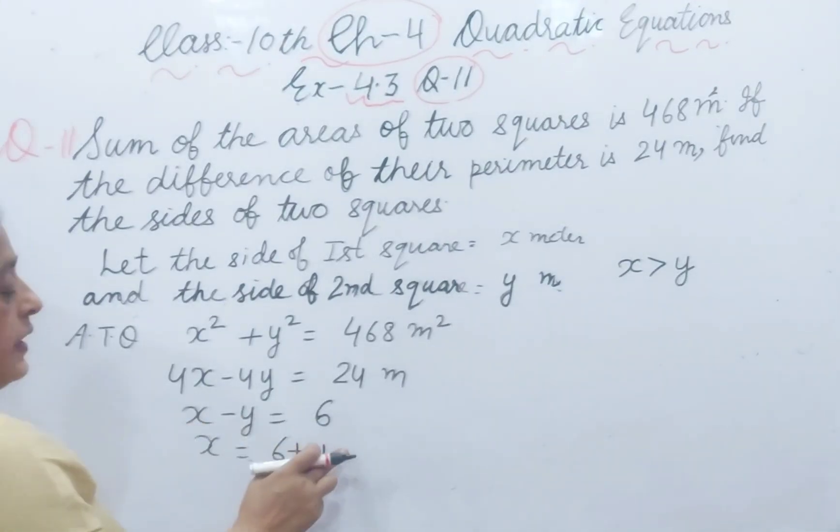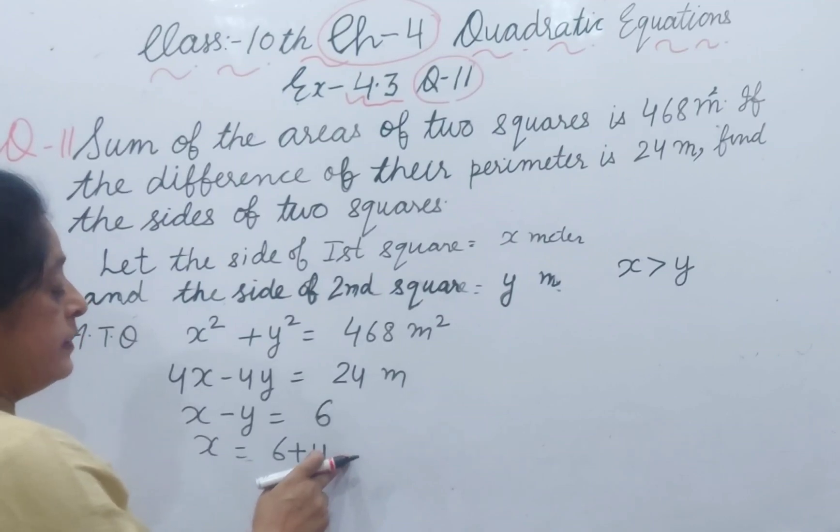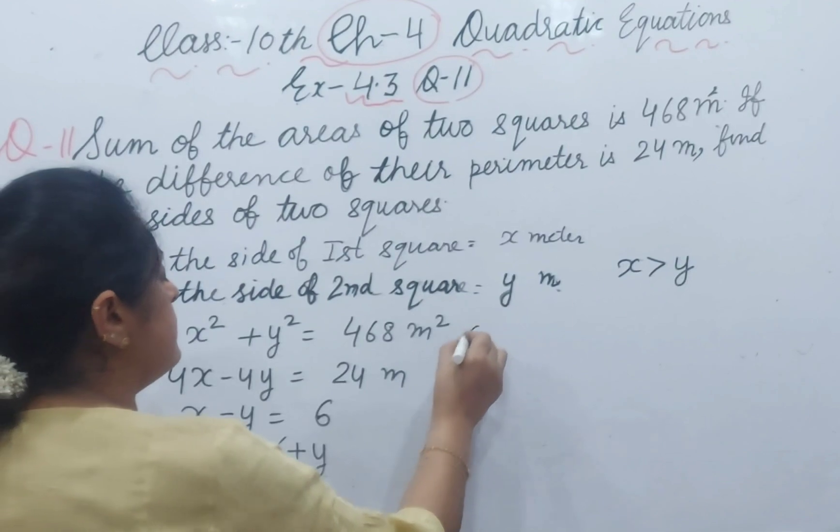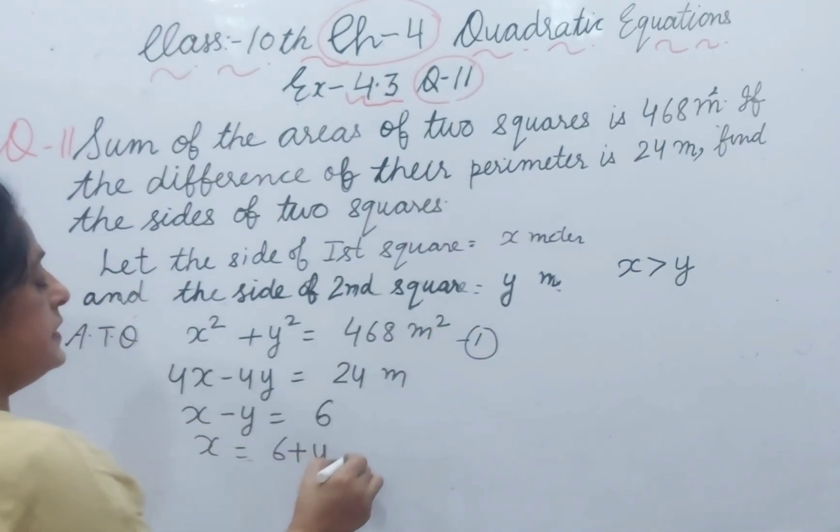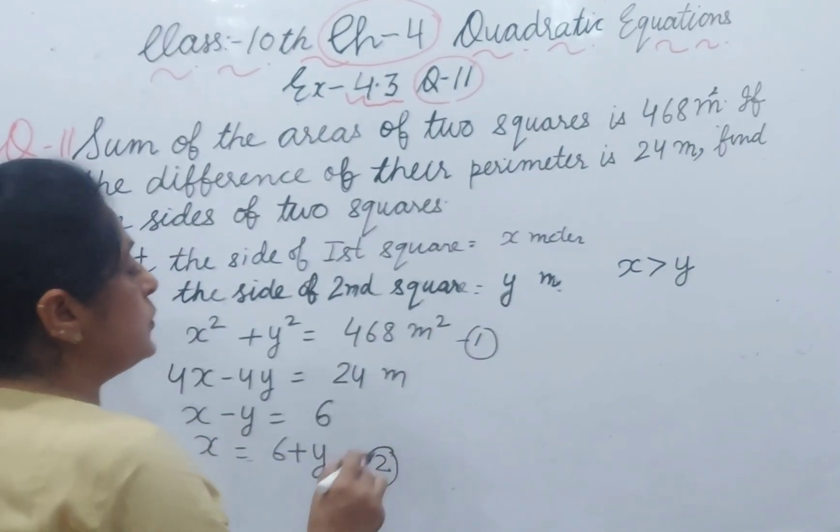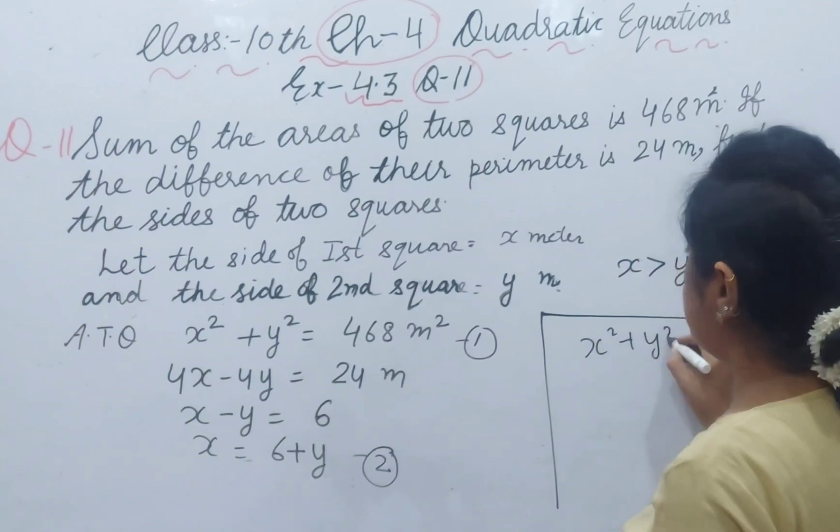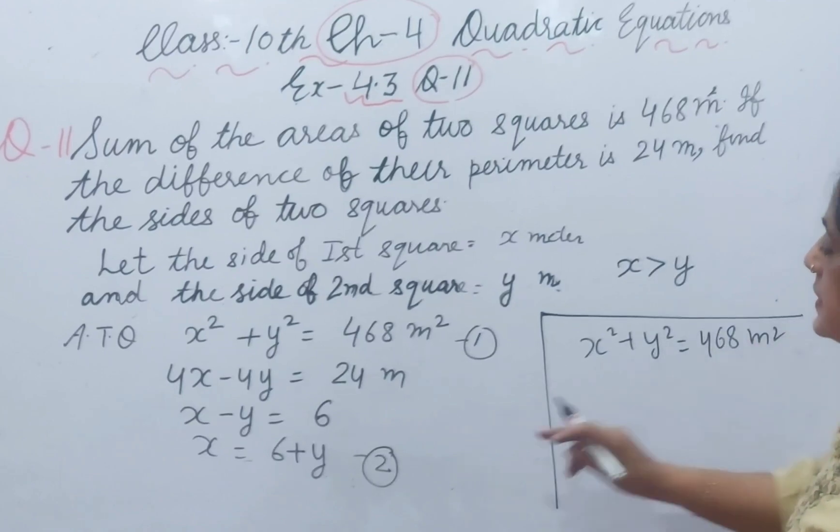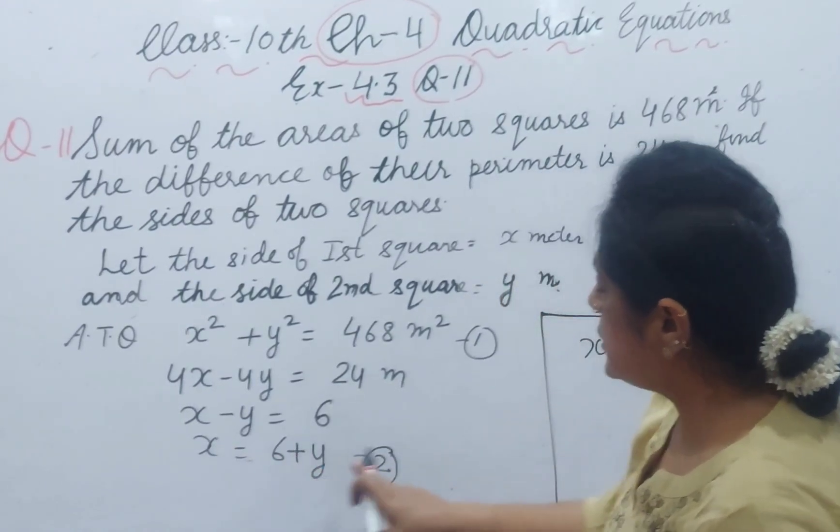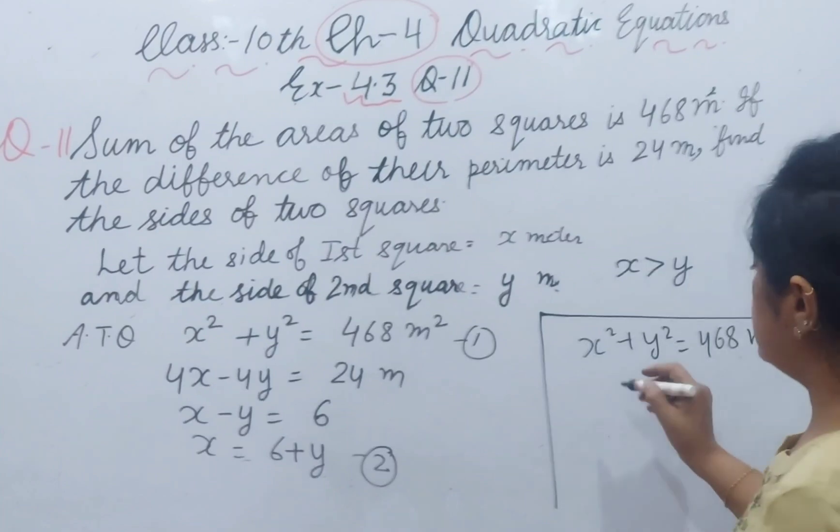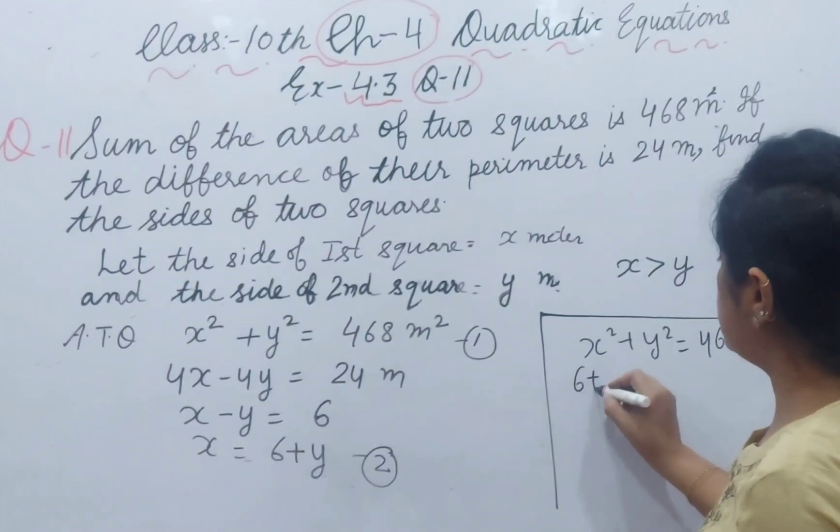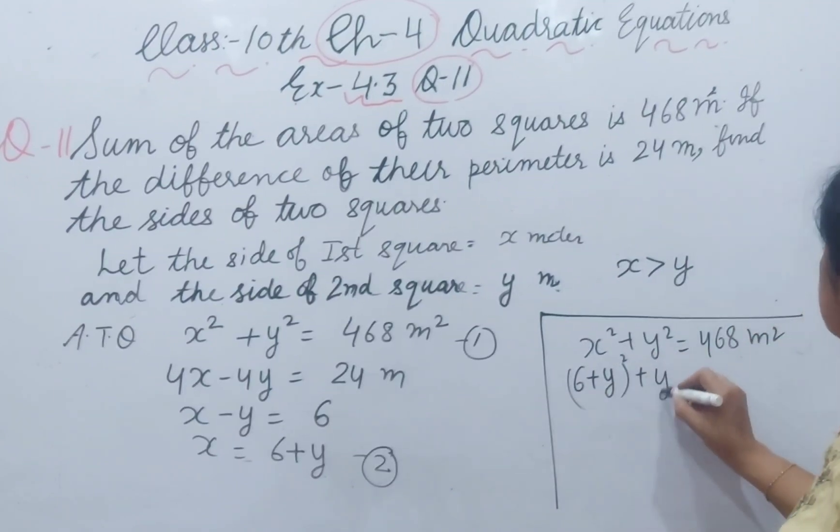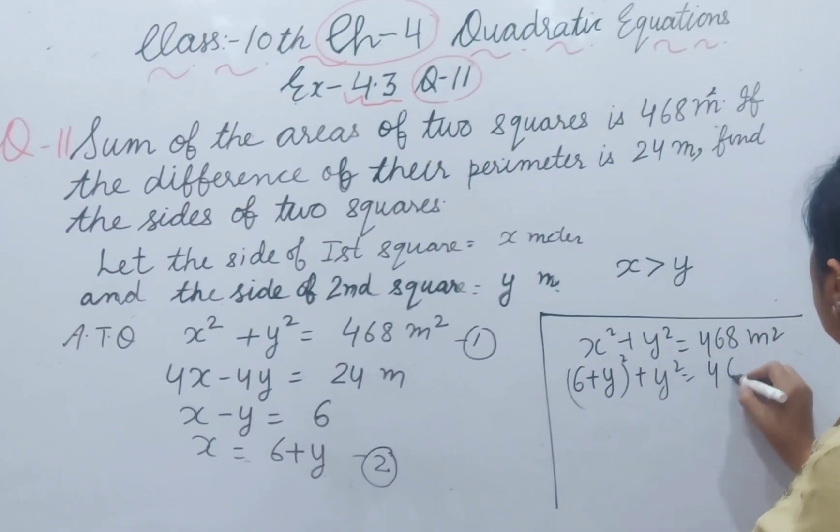This is our equation 1 and this is our equation 2. x square plus y square equals 468 meter square. Put the x value 6 plus y in this. It will be 6 plus y whole square plus y square equal to 468.